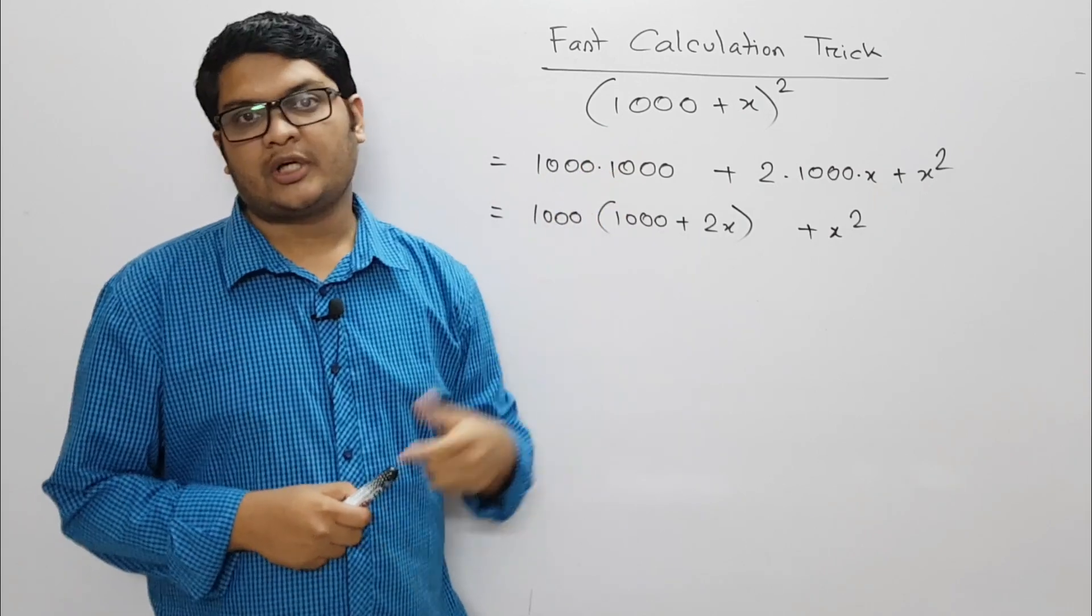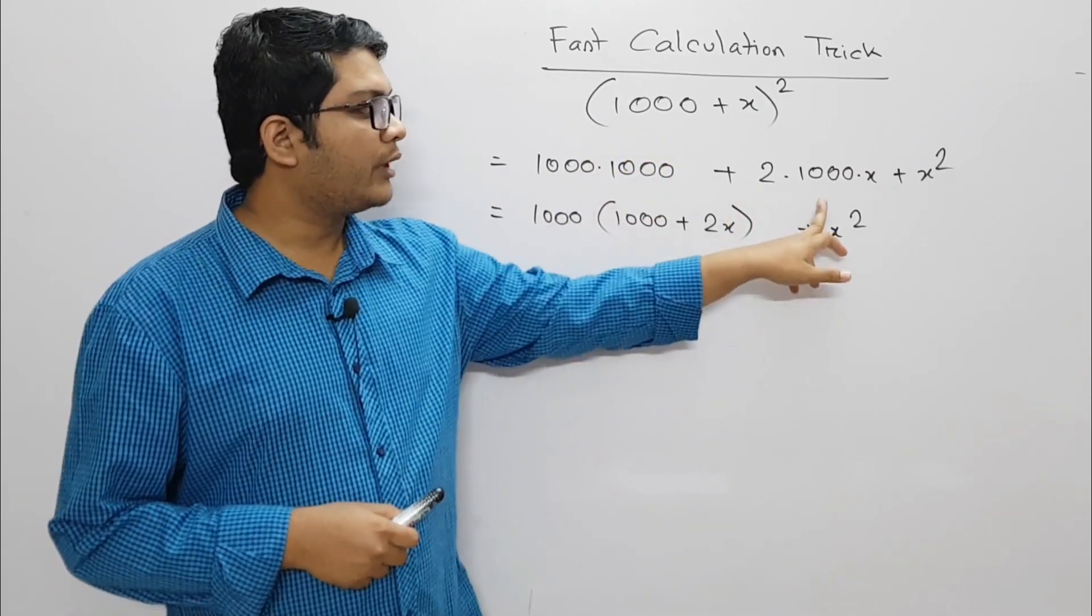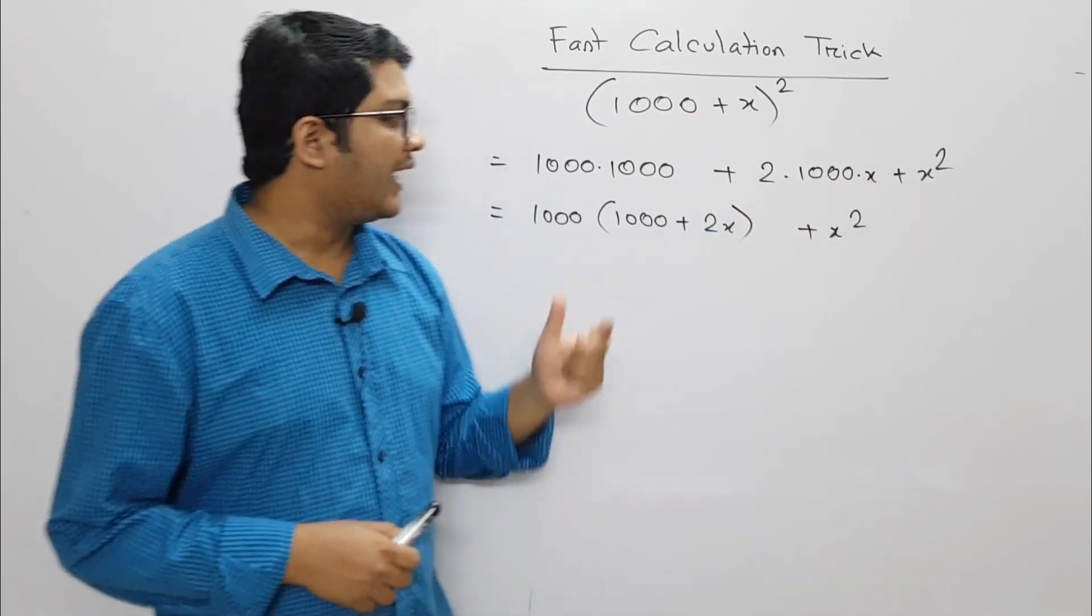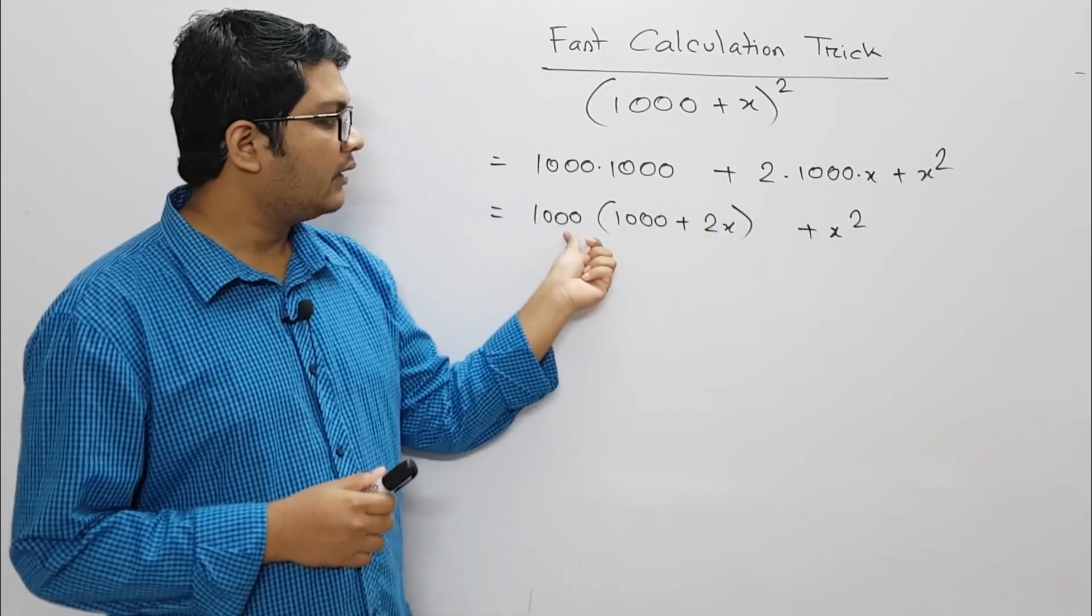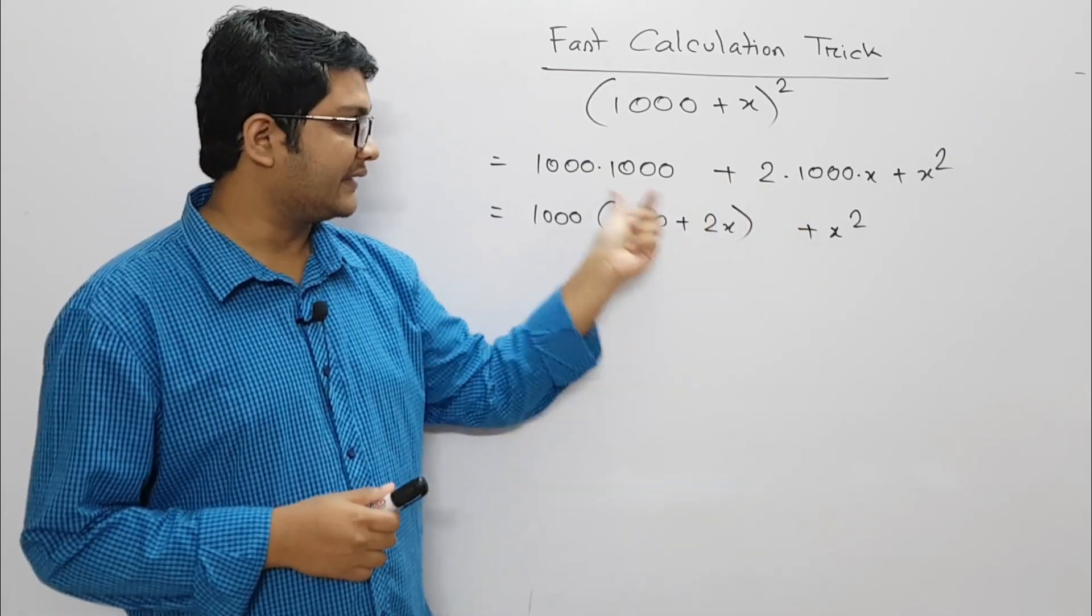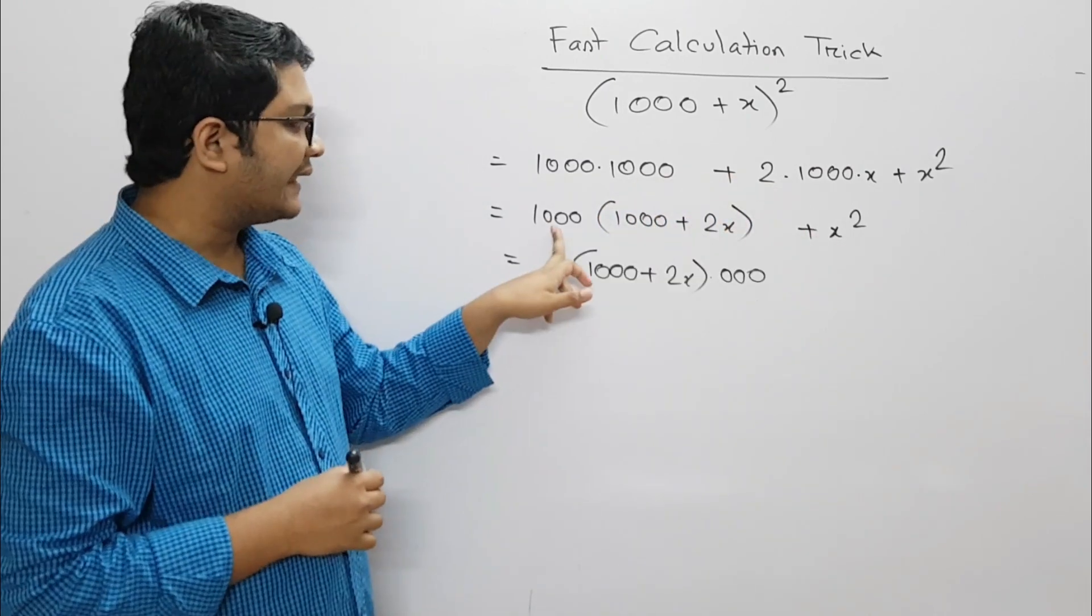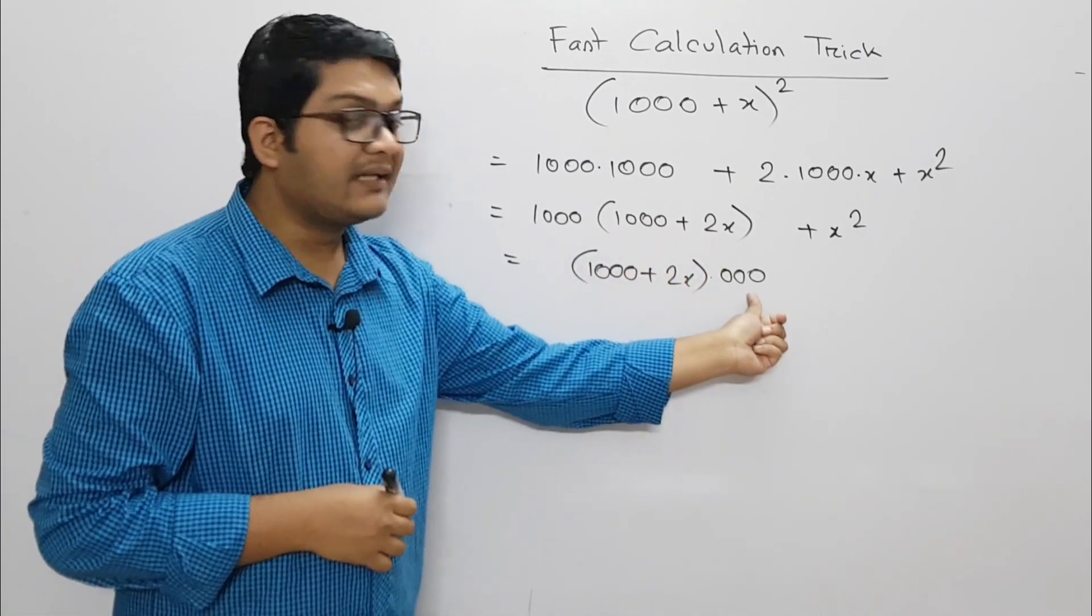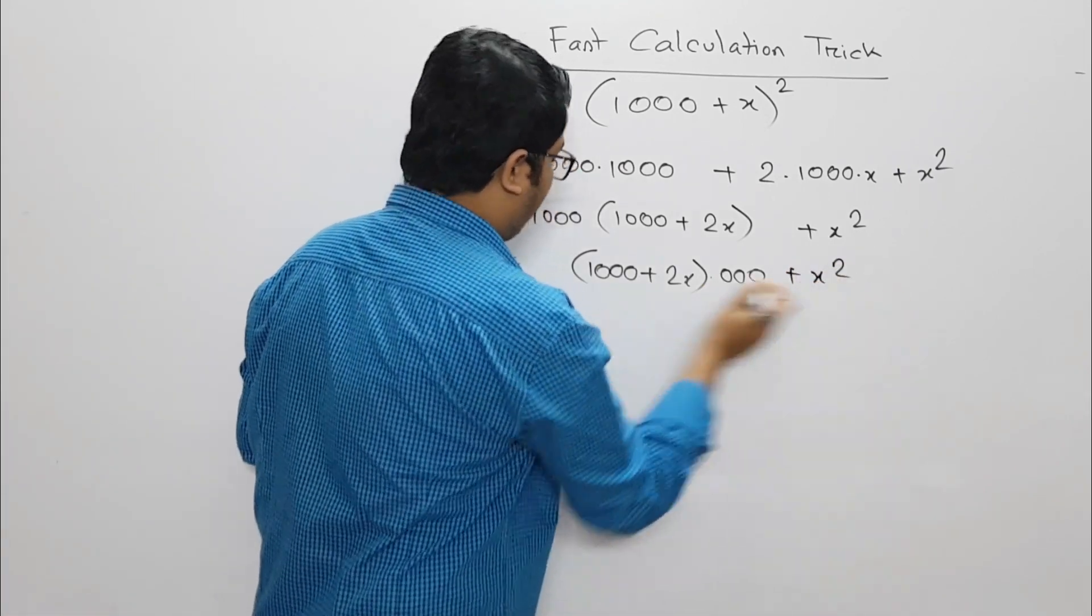So the formula will be a squared. A plus x squared equals a squared plus 2ab plus b squared. That's a common formula. a squared is 1000 squared. So a squared plus 2ax, that's a squared plus 2ax plus x squared.